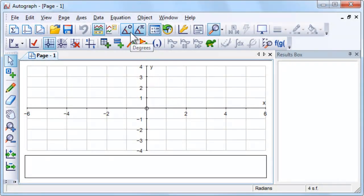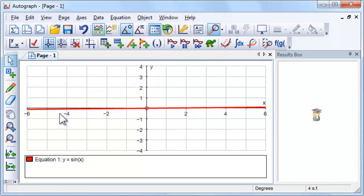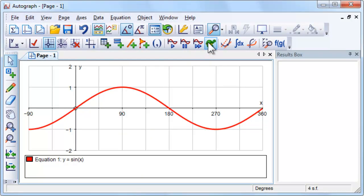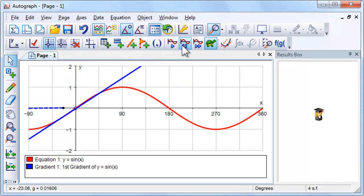We begin by plotting the sine curve and its gradient function in degrees, and use this to motivate the introduction of radians. The gradient function will plot slowly, stopping at important points. Click Pause Plotting to resume.